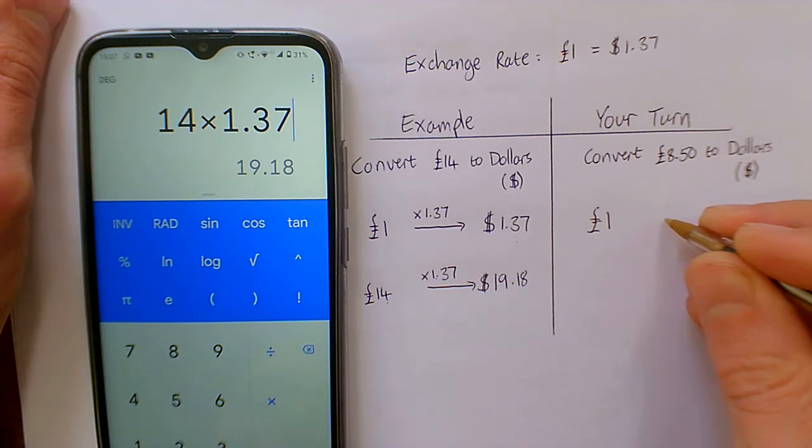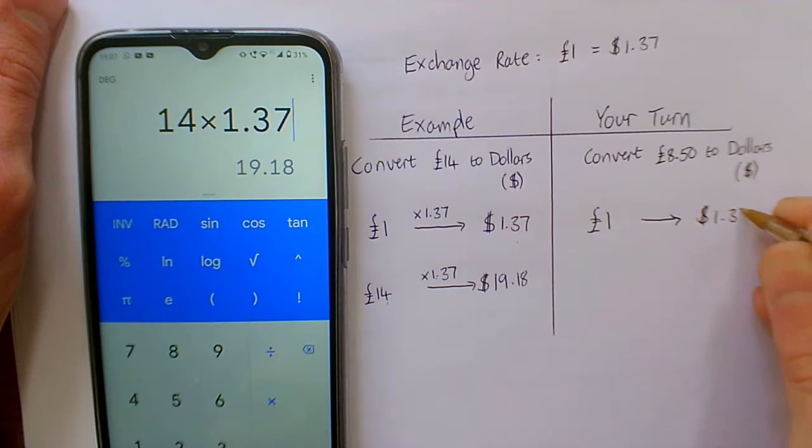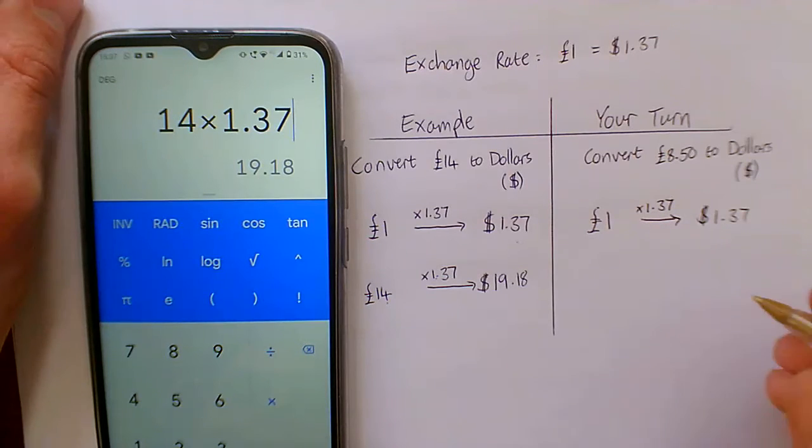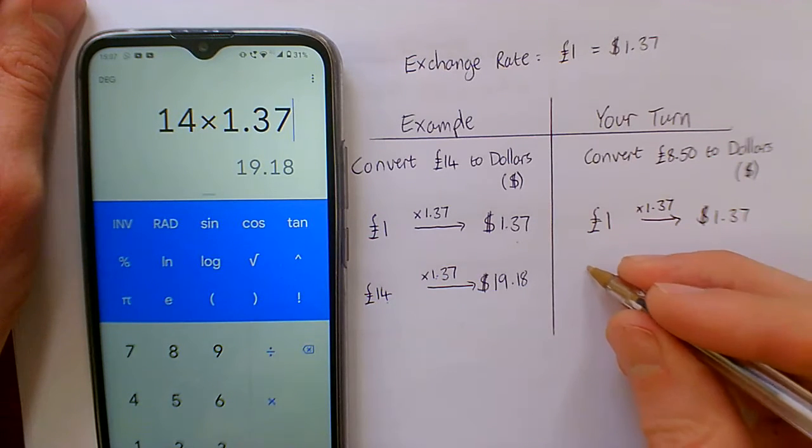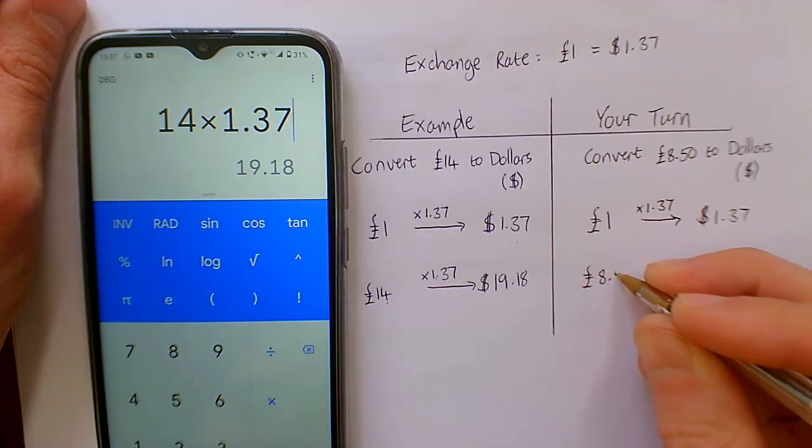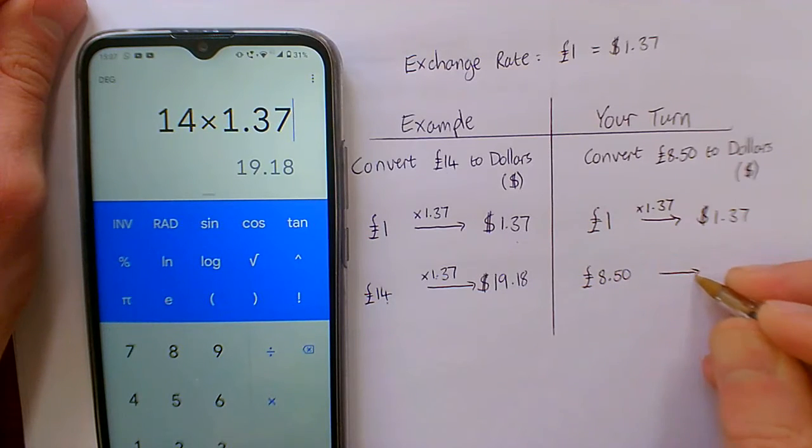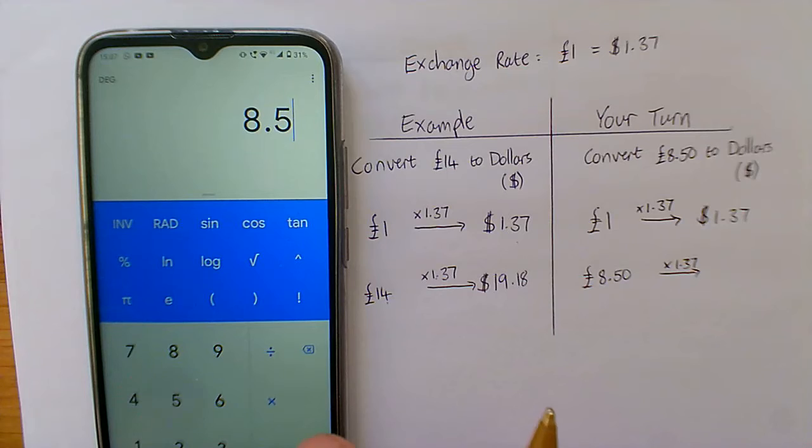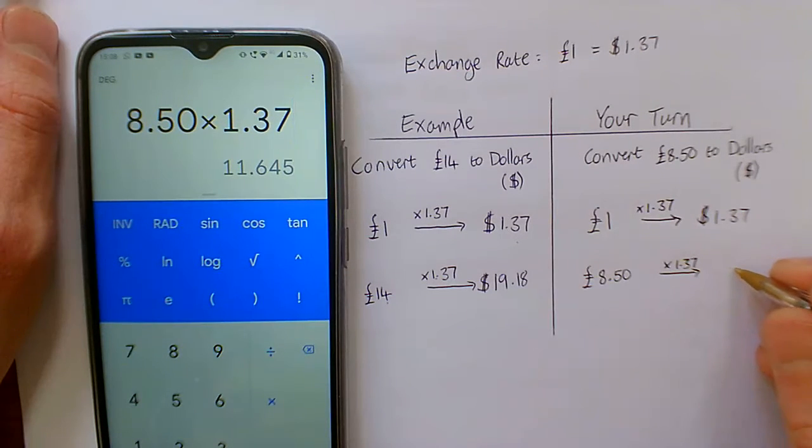So let's run through it. Same layout as we did for the first one. So one pound goes to $1.37. So on the top here, we're timesing by 1.37. We want to do the same with £8.50. Well, we're still timesing by 1.37 because that is our exchange rate. So let's clear our calculator. 8.50 times 1.37.